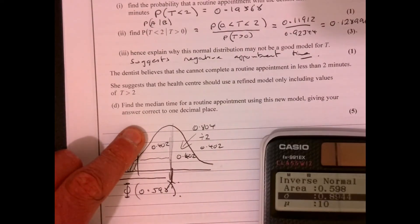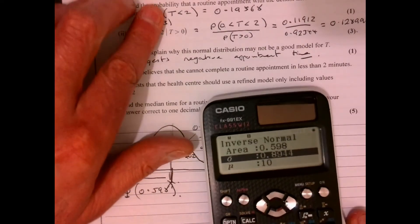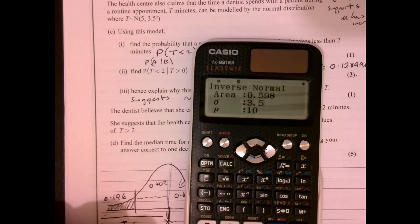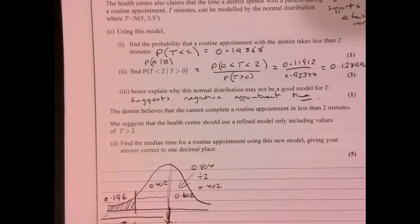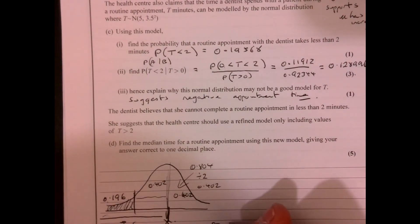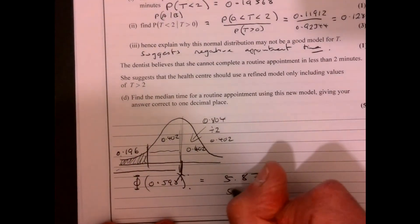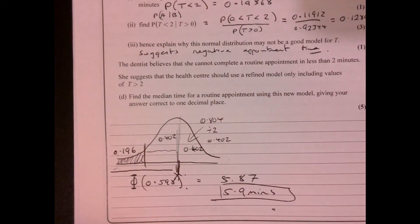And our standard deviation that we're going to be working with, which we were told in this question here. 3.5. So I'm still working with the same parameters there. And five. So that gives me 5.87 minutes. And it said one decimal place. So 5.9 minutes.